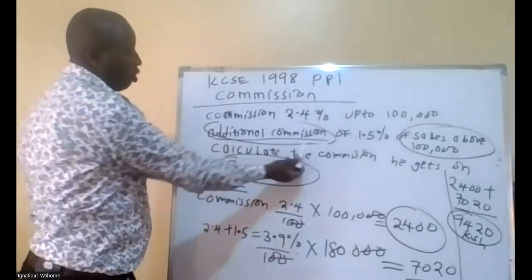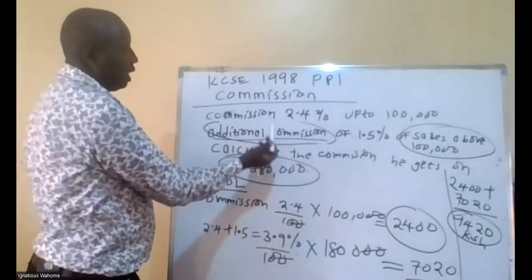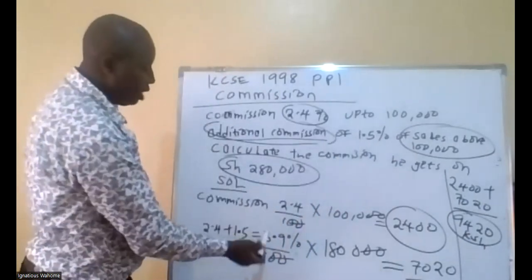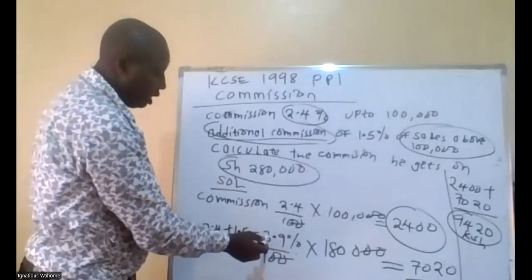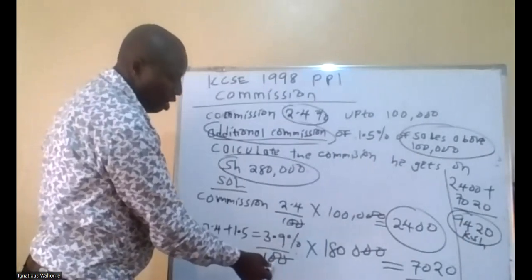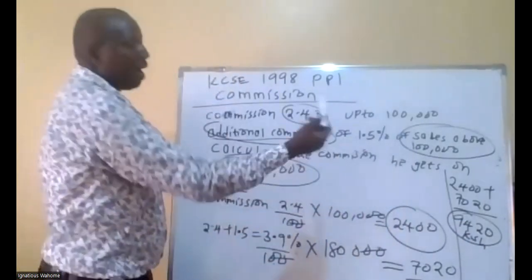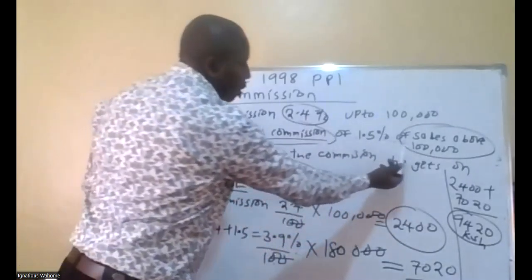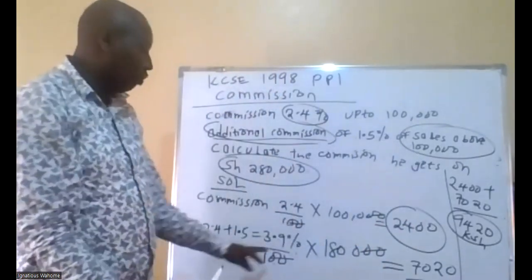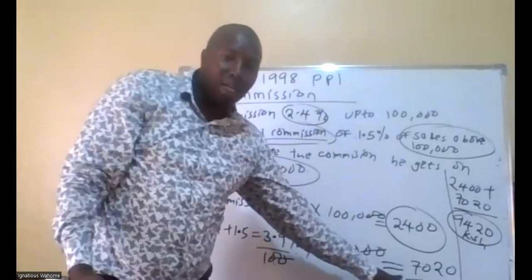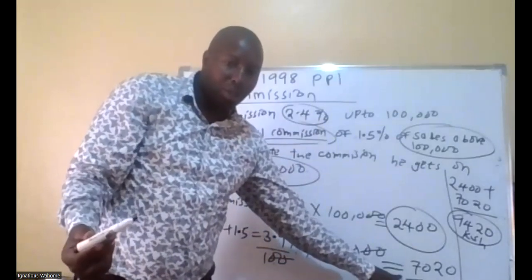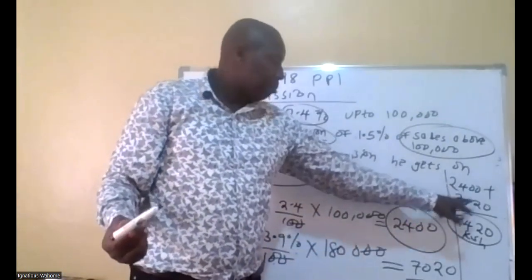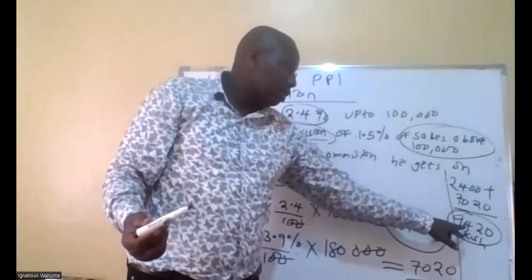So when you see the keyword 'additional commission,' you take the previous commission, which was 2.4, plus 1.5, to get the new commission of 3.9%. So 3.9 over 100 of sales above 100,000, which was 280,000 minus 100,000 = 180,000. So 3.9% of 180,000 gives 7,020 as the second commission. First commission was 2,400. So total earnings: 2,400 plus 7,020 equals 9,420.